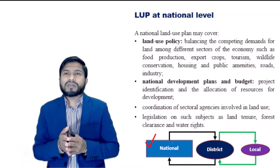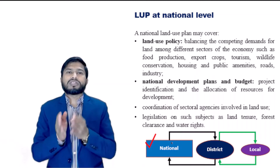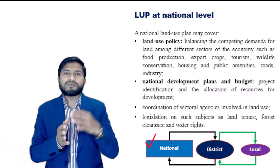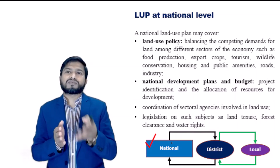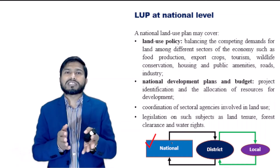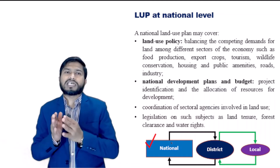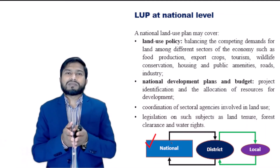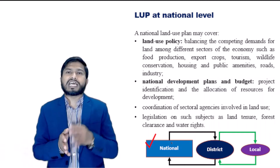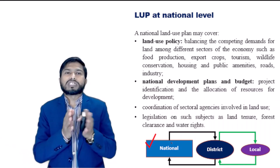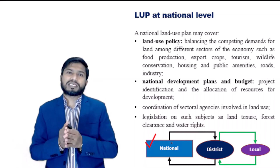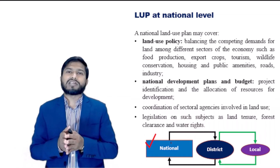A national land use plan may cover land use policy, including balancing the competing demands for land among different sectors of the economy such as food production, export crops, tourism, wildlife conservation, housing and public amenities, roads, industries, etc. It also includes the national development plan and budget, emphasizing project identification and the allocation of resources for development, coordination of sectoral agencies involved in land use, and legislation on such subjects as land titling, forest clearance and water rights.